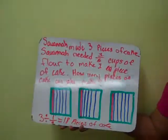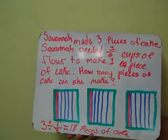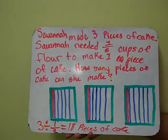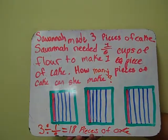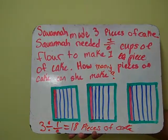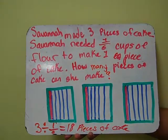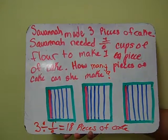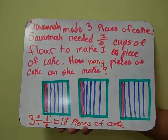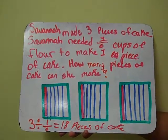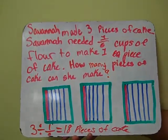Savannah made three pieces of cake. Savannah needed one sixth cups of flour to make one piece of cake. How many pieces of cake can she make?